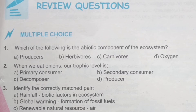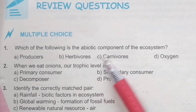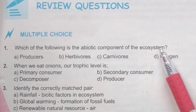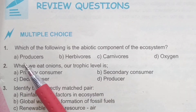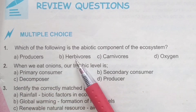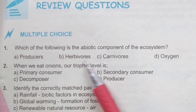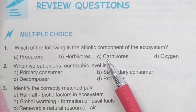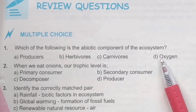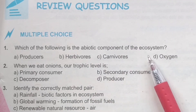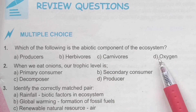First statement is: which of the following is the abiotic components of the ecosystem? A option: producers. B option: herbivores. C option: carnivores. And D option: oxygen. The correct option of this statement is D option.